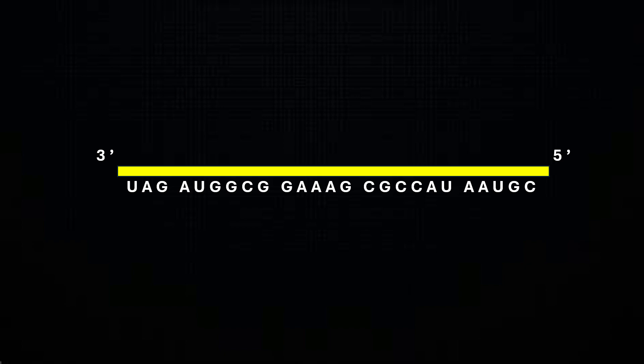Suppose we have a linear RNA molecule. When we read it from 3 to 5, we read the following bases: UAG, AUGGCG, GAAG, CGCCAU, AAUGC.